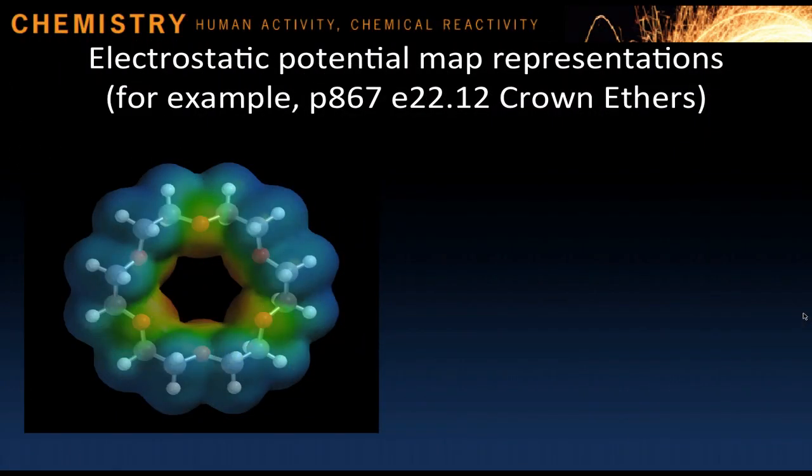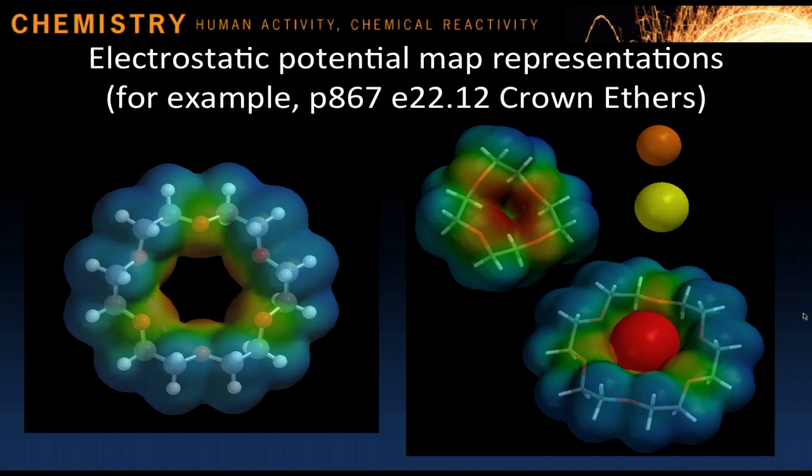Electrostatic potential map representations indicate the electron-rich sites, colored red, and electron-deficient sites, colored blue, on the electron density isosurface of a molecular model. These can be generated in Spartan molecular modeling software and displayed in Odyssey. They're used in eResources throughout our textbook. The example here is from chapter 22, where we look at crown ethers and their ability to bind metal ions with some selectivity.